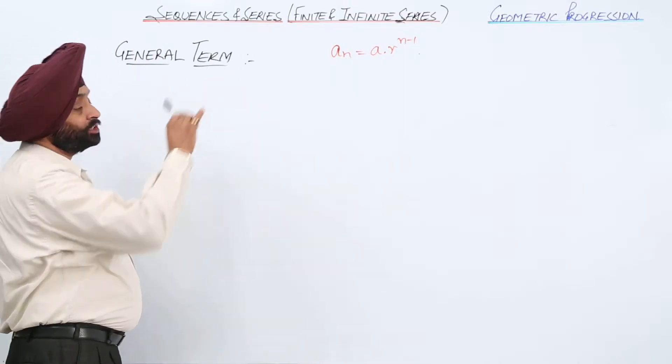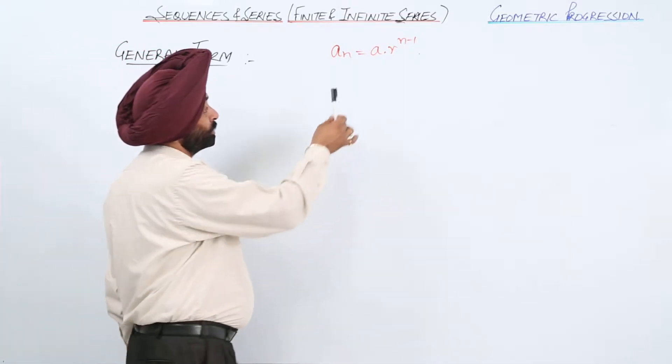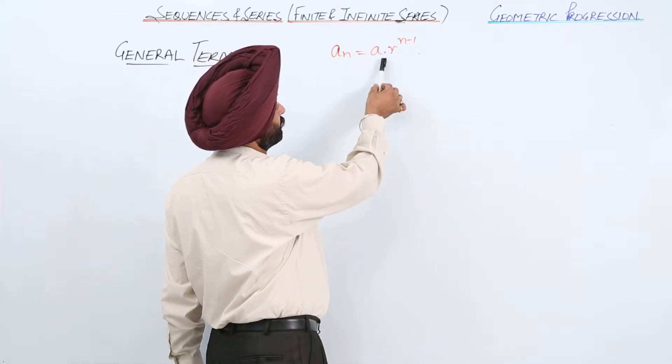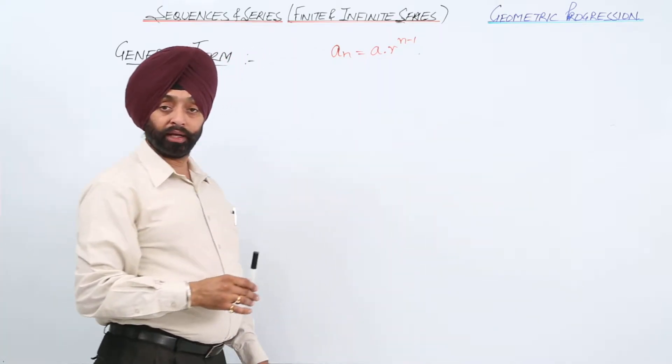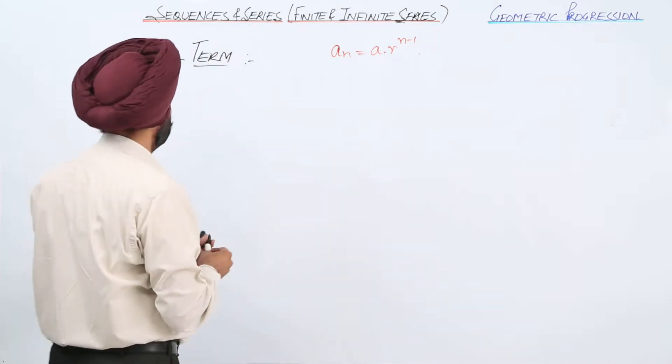Now, the general term for a GP series is denoted by An equals a times r raised to power n minus 1. Let's derive this result.